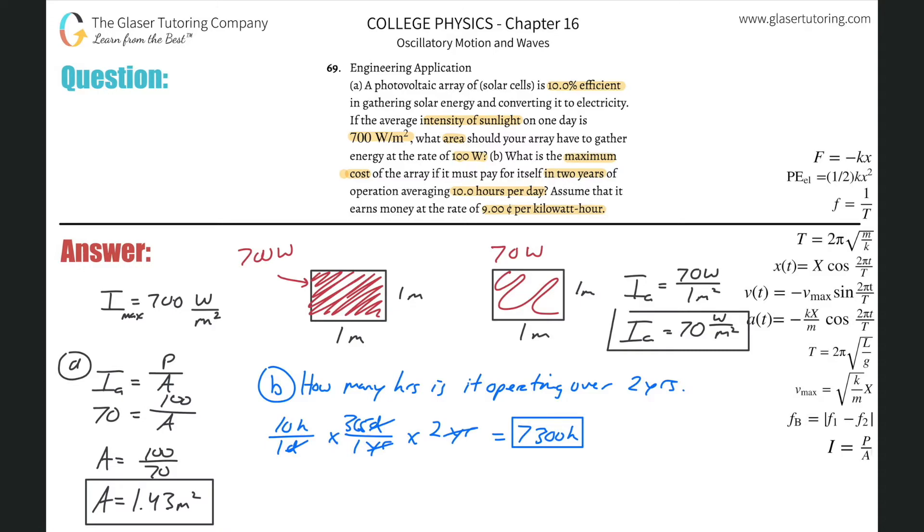Now, how much does it cost to operate? So the question is now, how much does it cost to operate? So basically, if it operates 7,300 hours over two years, and it costs nine cents per kilowatt, I'm going to convert that into just dollars for now. So that's 0.09 dollars per one kilowatt hour. How much does this cost over two years, which would be equivalent to 7,300 hours over the two years.